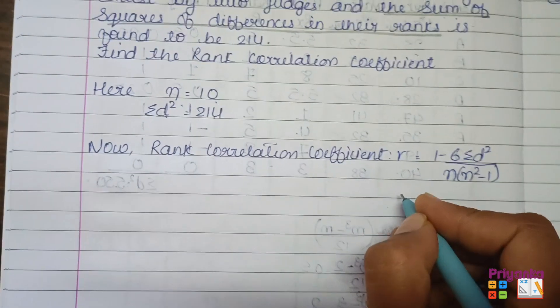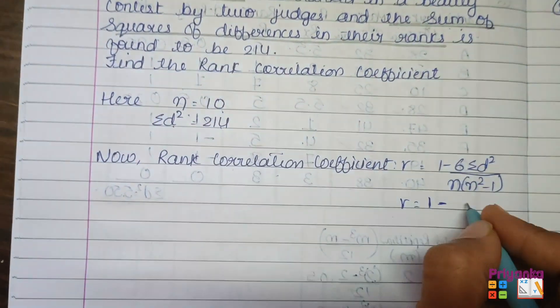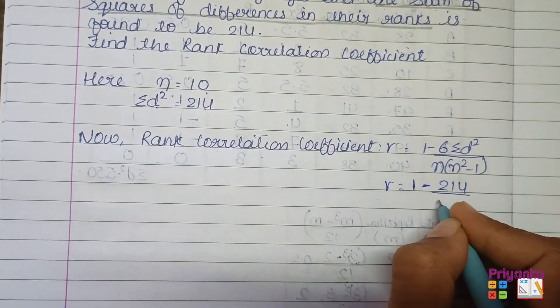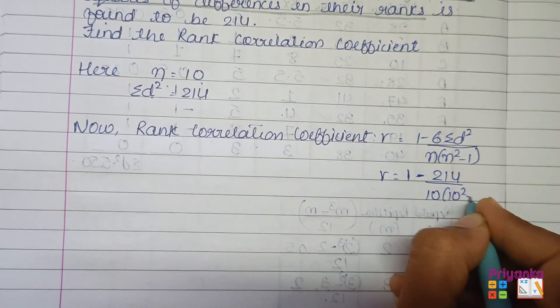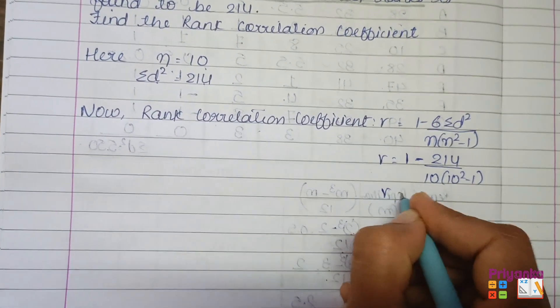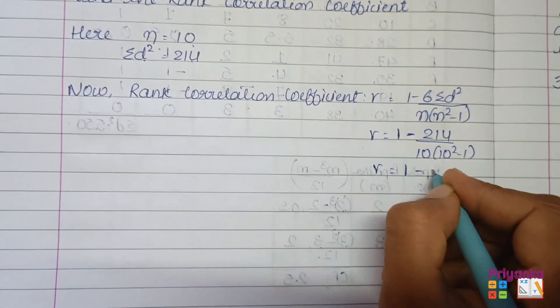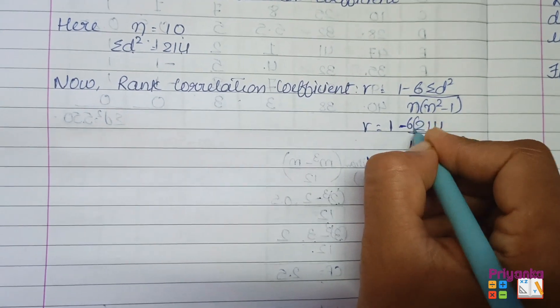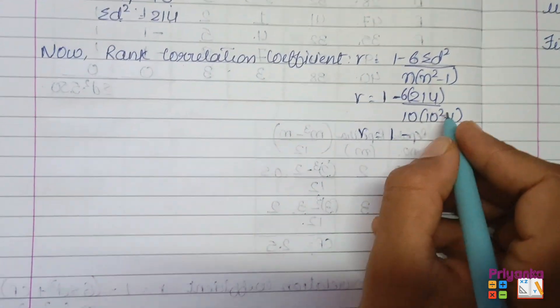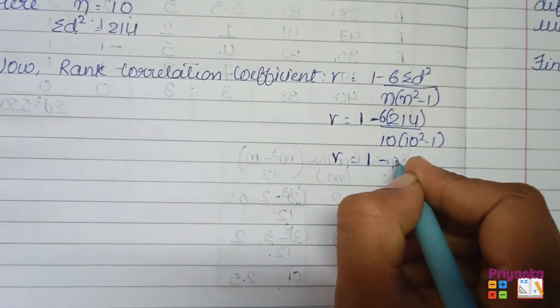So just skip into the formula: 1 minus 6 sigma d square, that is 214, and that is 10, 10 square minus 1. So here, 6 into 214.